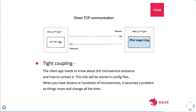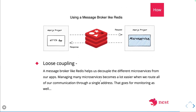Direct TCP communication means tight coupling — service A is directly coupled with service B because service B needs to respond so service A can reply to the client. Asynchronous message broker communication is loosely coupled: you send an event to the target service, and that service does its task without needing to acknowledge the source service, because it's message-broker-based communication.